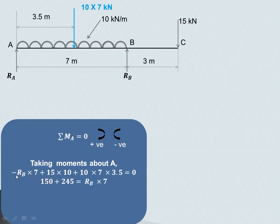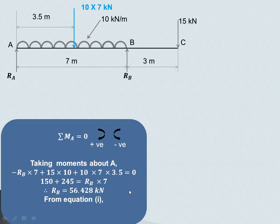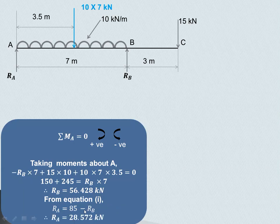Transferring the RB term to the other side: 15 into 10 equals 150, and 10 into 7 into 3.5 equals 245. Therefore RB into 7 equals 150 plus 245 equals 395, giving RB equals 56.428 kilo Newton. From equation 1, RA equals 85 minus RB, so RA equals 85 minus 56.428 equals 28.572 kilo Newton. In this way we calculate the beam reactions for an overhanging beam.